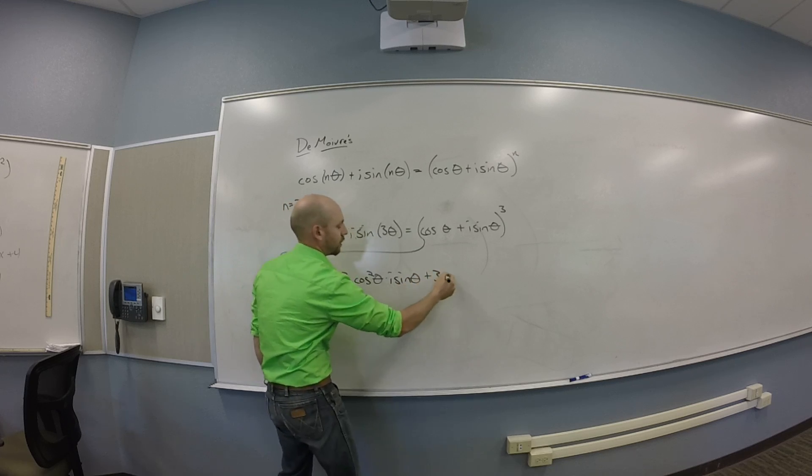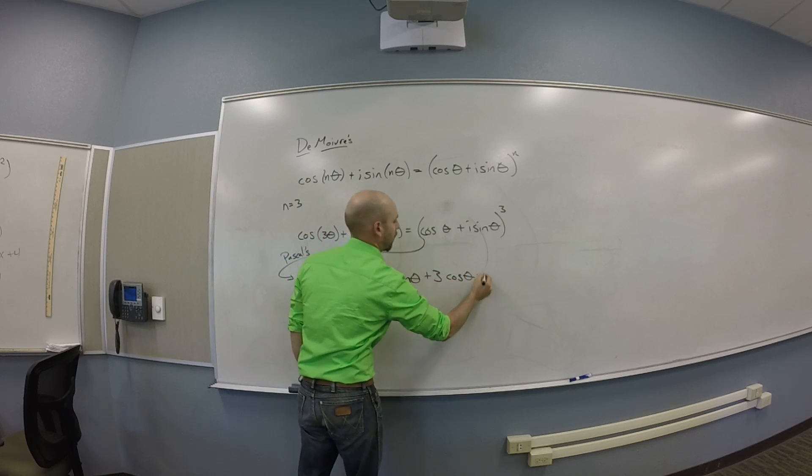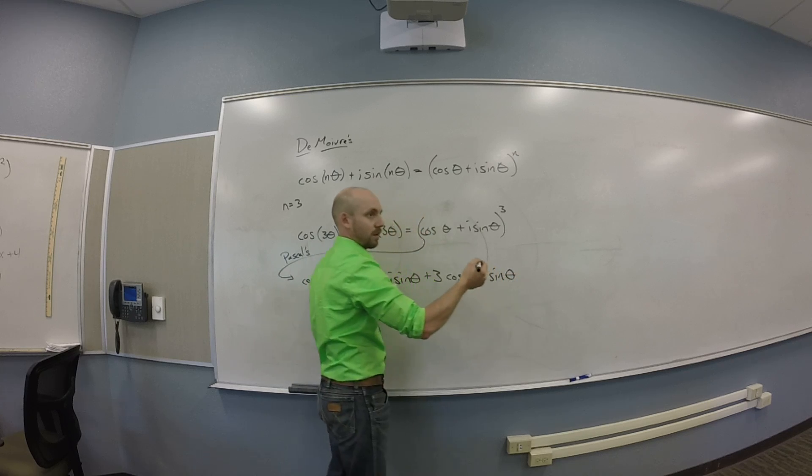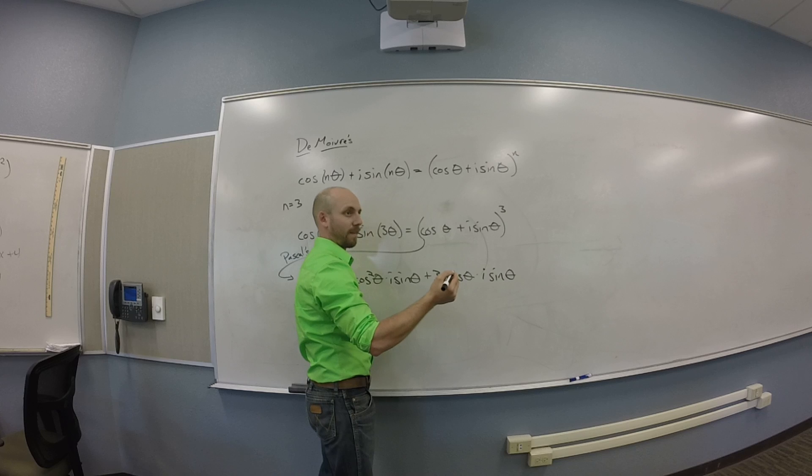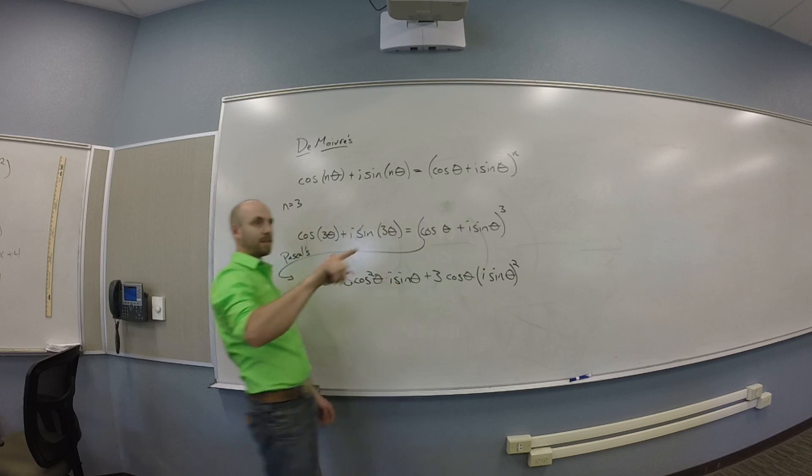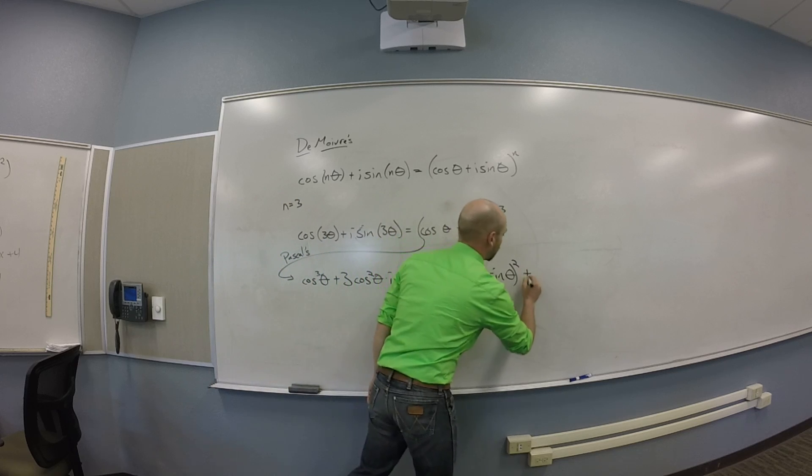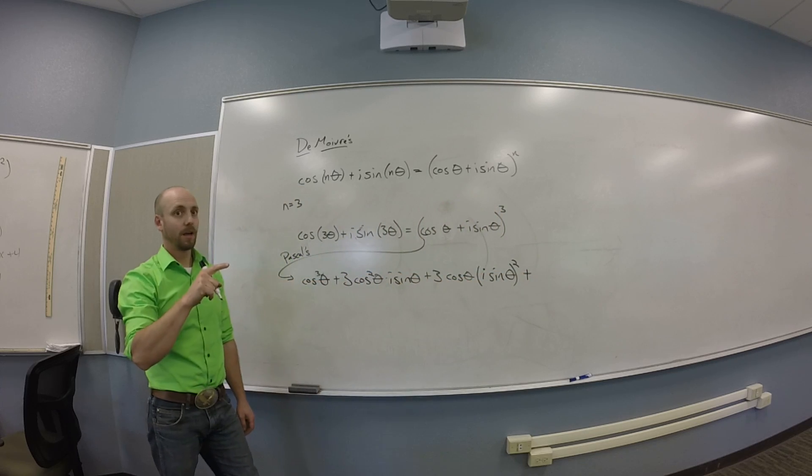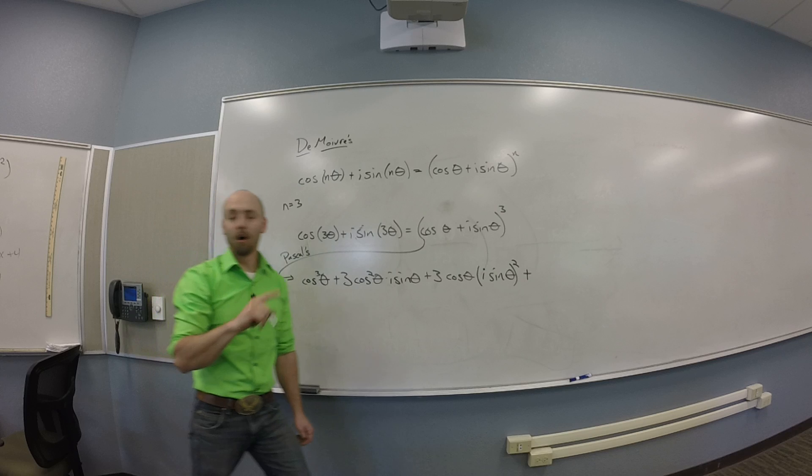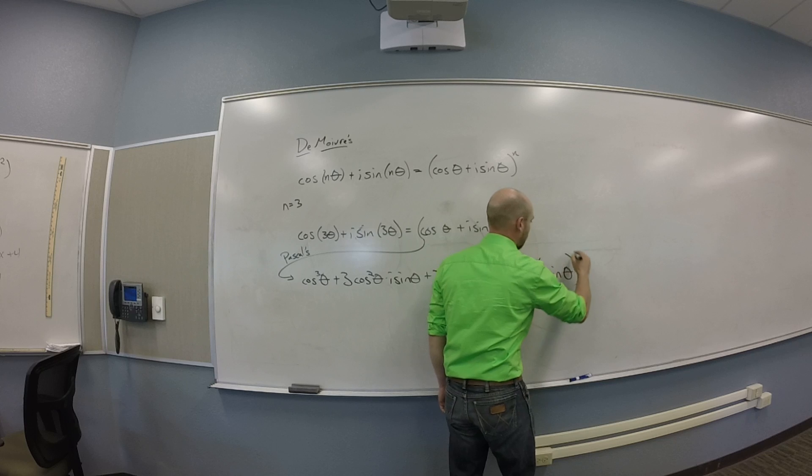Plus 3 cosine theta times i sine theta squared, wait, where do you square? You need to take this whole thing and square it. Your last term should be plus 1, right? And what are you cubing? All of i sine theta. So you need i sine theta all cubed.